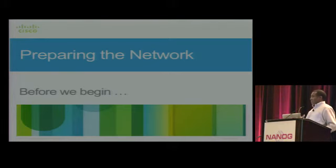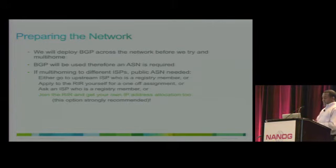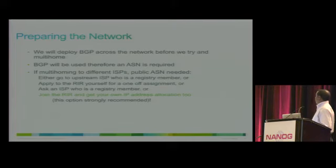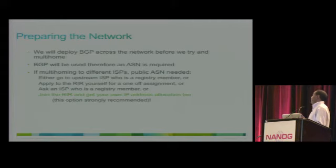Next is how to implement or roll out BGP in your network. You will need an AS number. If you want to deploy BGP, you need an autonomous system number. If you are multi-homing to multiple ISPs, you will need a public autonomous system number. If you are just peering with one ISP, you can use a private AS number.